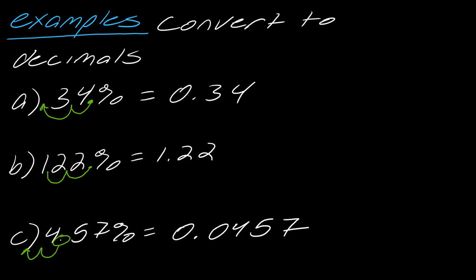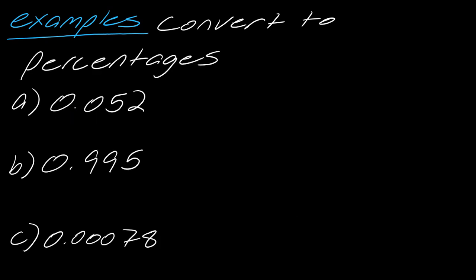Now let's go the other way. How do I convert from a decimal to a percent? I literally just go the opposite direction now. I identify where the decimal is and move to the right. In this case, I move 1, 2 to the right. So as a percent, this would be 5.2%. Maybe you want to pause here and try these other two, then hit play when you're ready.